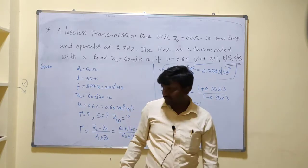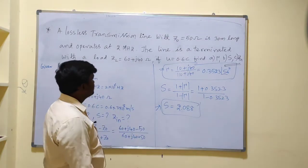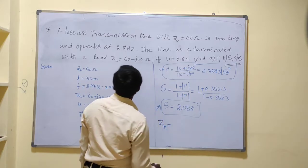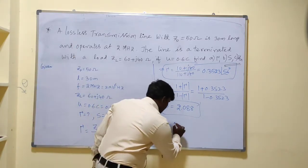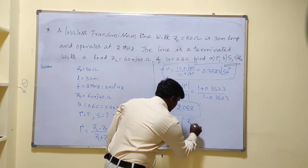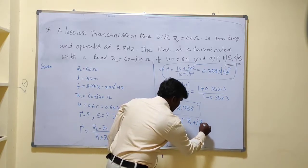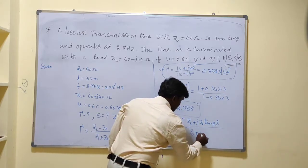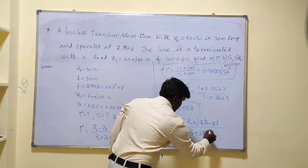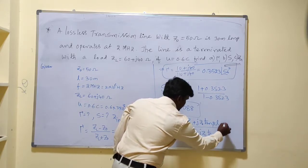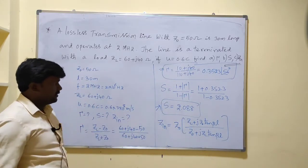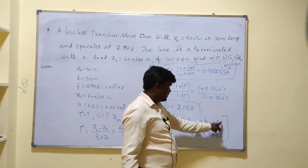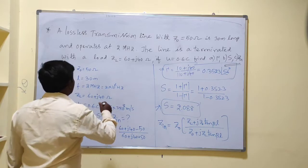Last, calculate Zin. For a lossless line, the formula is: Zin equals Z0 times (ZL plus j·Z0·tan(βl)) divided by (Z0 plus j·ZL·tan(βl)). Z0 and ZL are given, so we need to determine beta l. For that we first need to find beta.